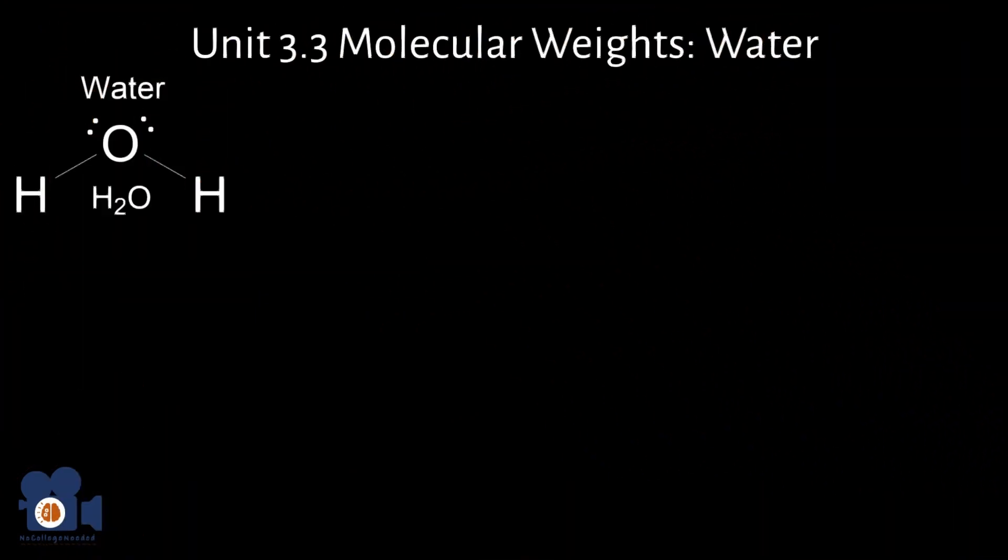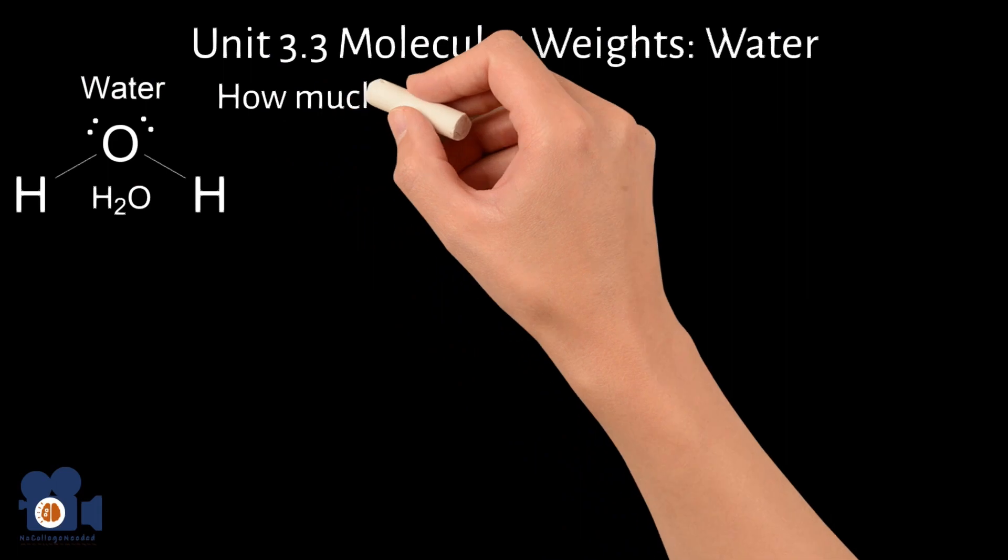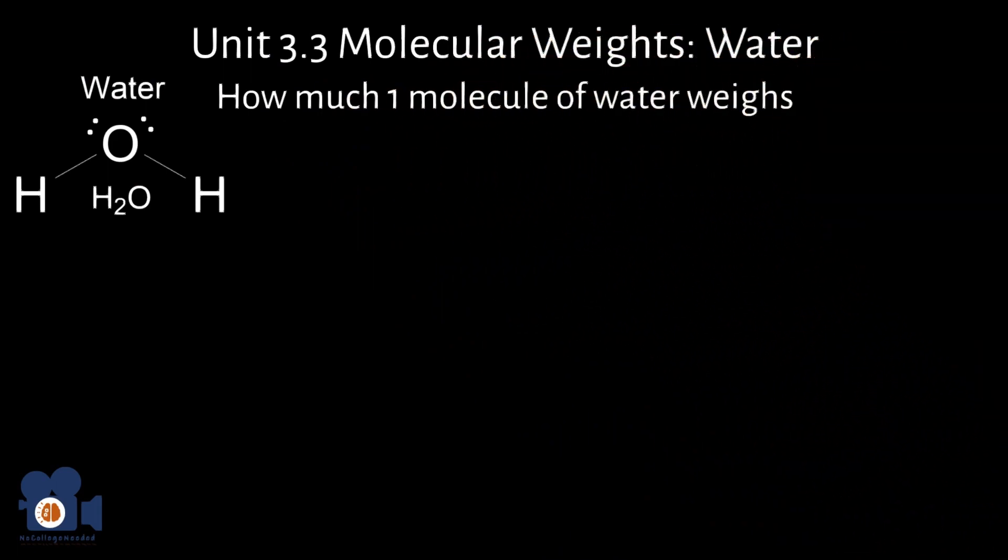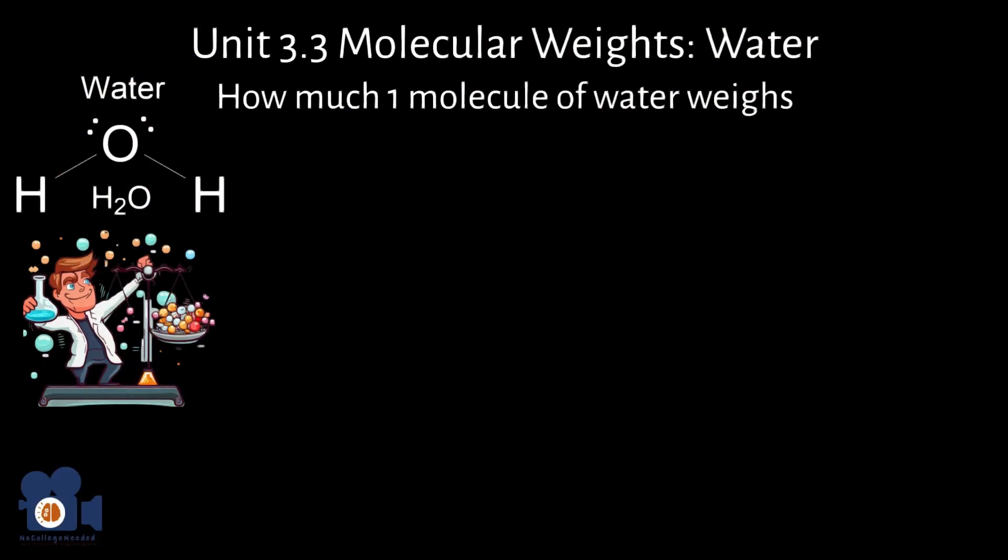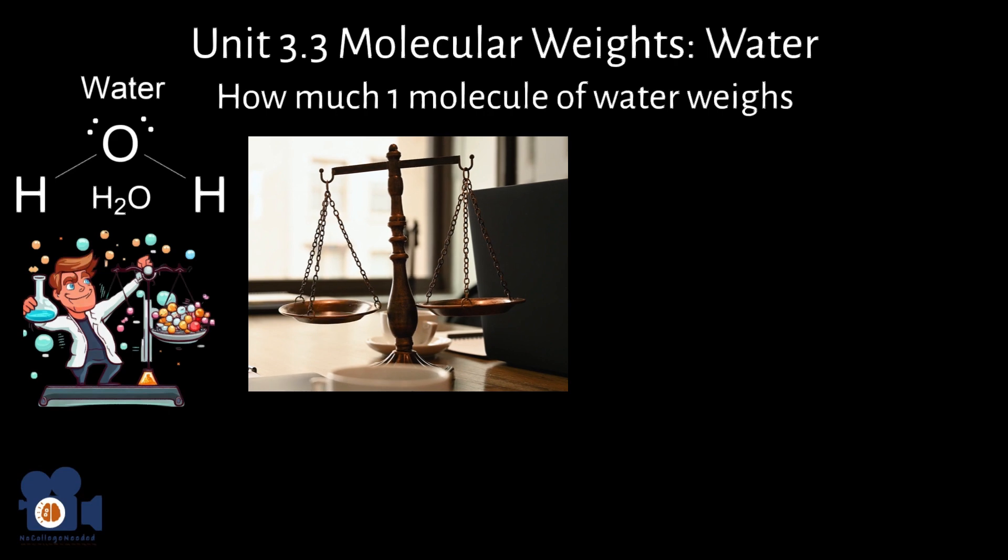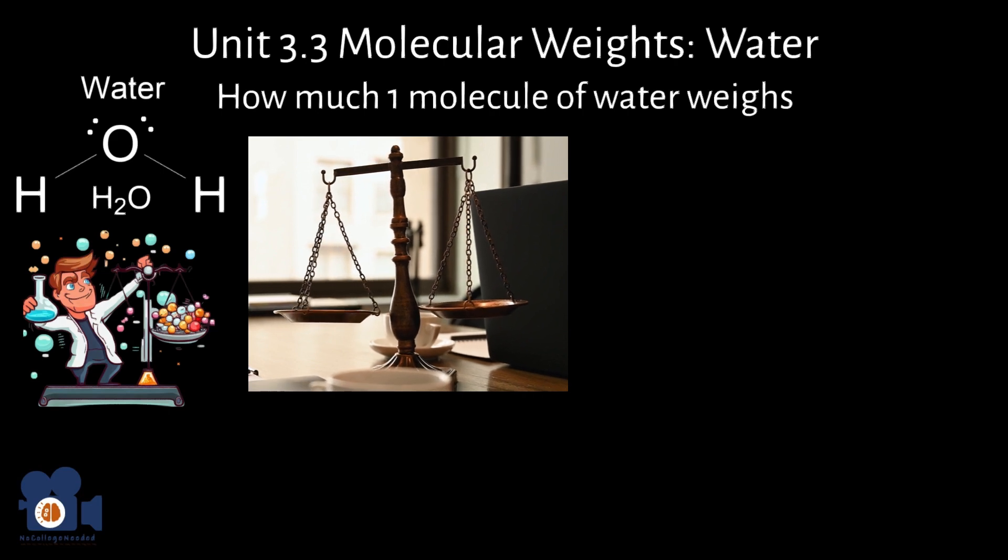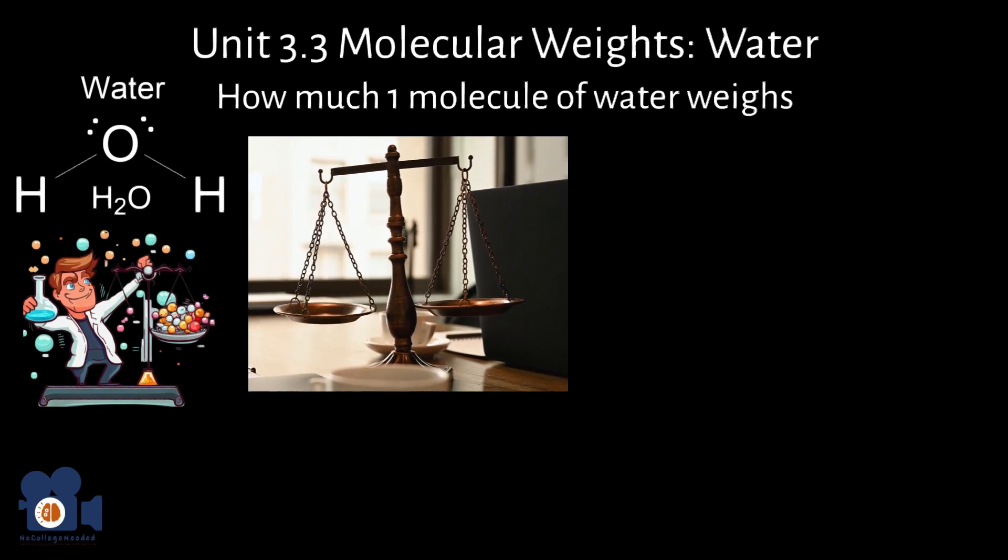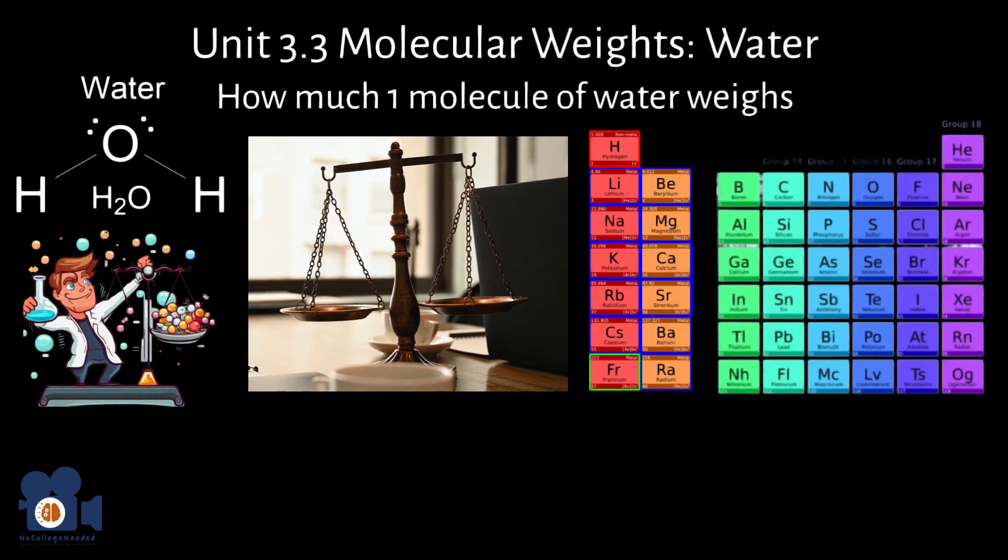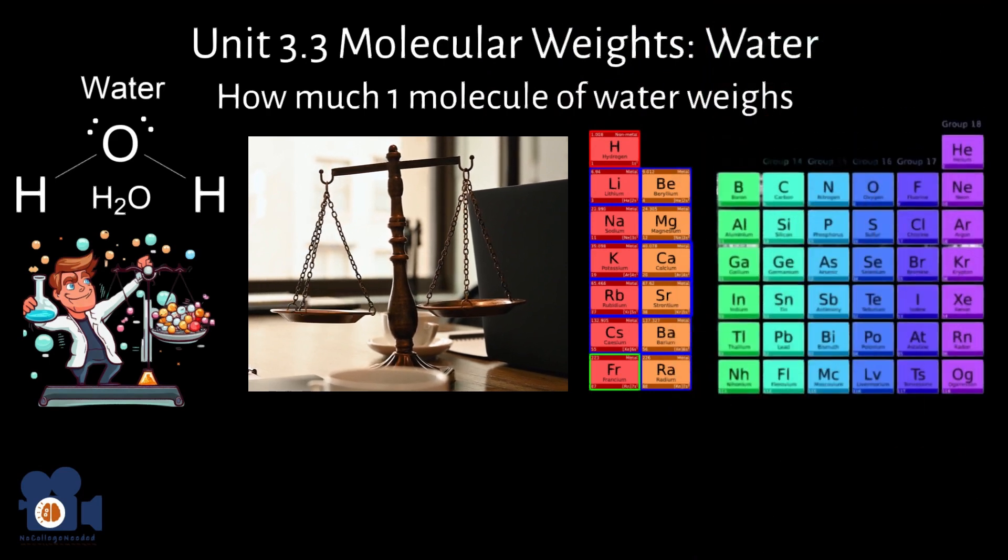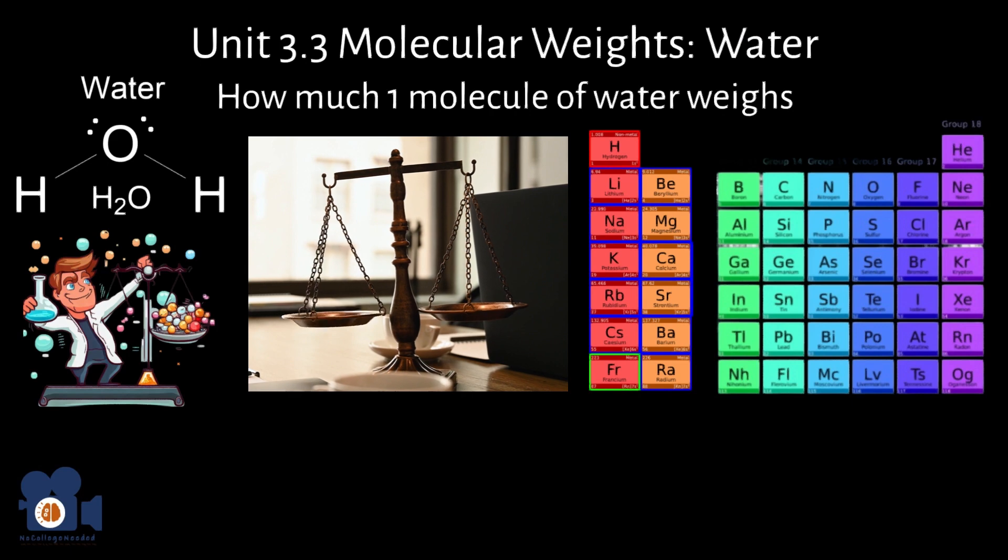For example, in the molecular formula H2O, the hydrogens don't just tell us the atoms in water, but also how much one molecule of water weighs. Once we know how much one molecule of a substance weighs, we can calculate how many molecules are in a set weight of the substance on a scale. This allows us to accurately react the correct number of chemicals in a chemical reaction. To determine the molecular weight of a substance, we look at the periodic table to get the corresponding AMUs for the elements in the molecular formula.